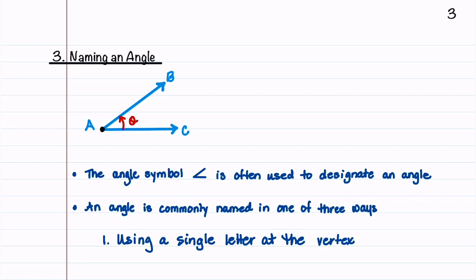We're now going to talk about the different ways that an angle can be named. The angle symbol, notated like this, is often used to designate an angle. There are three common ways to label an angle.